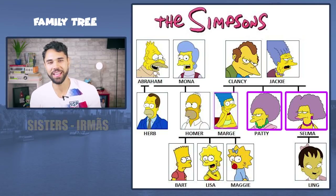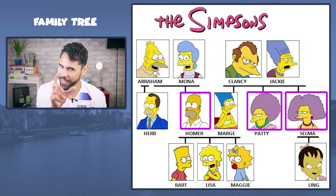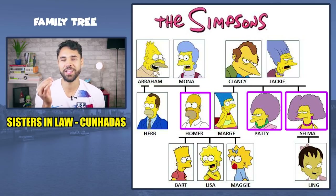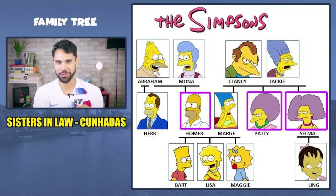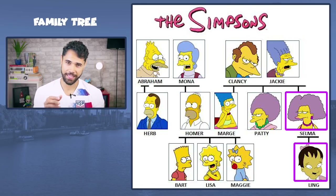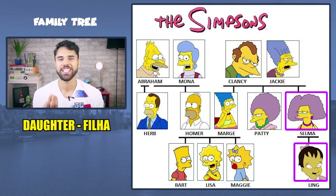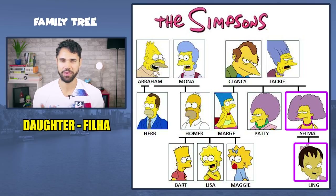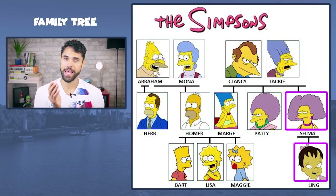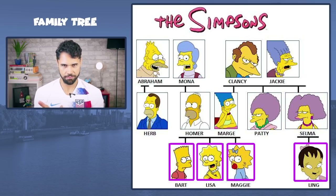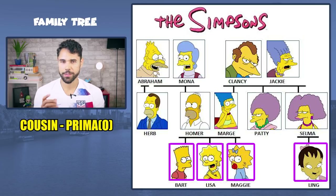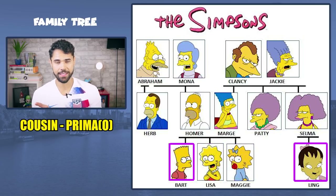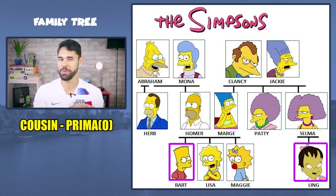A Marge ela tem mais duas irmãs — two sisters. E elas são sisters-in-law do Homer. Então temos aqui a Patty, que é a sister-in-law do Homer, e a Selma, outra sister-in-law do nosso amigo Homer. A Selma tem uma filha. Filha em inglês é daughter — olha como se escreve totalmente diferente de como se pronuncia. E ao mesmo tempo que ela é daughter da Selma, ela é prima do Bart, da Lisa e da Maggie. Prima em inglês é cousin — e também serve como primo, masculino e feminino. Então primo e prima, tudo cousin.